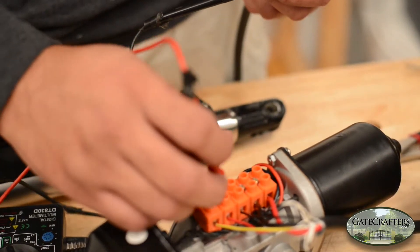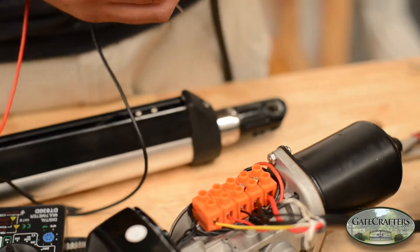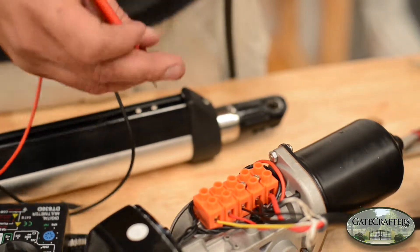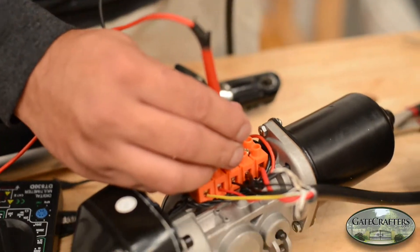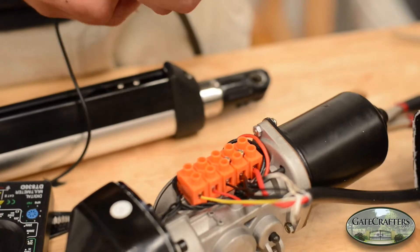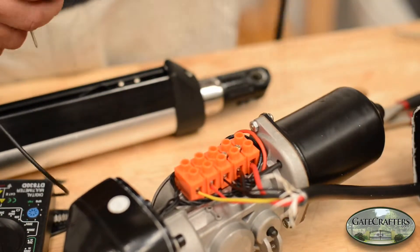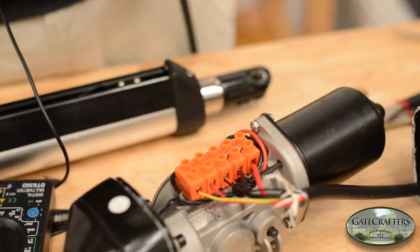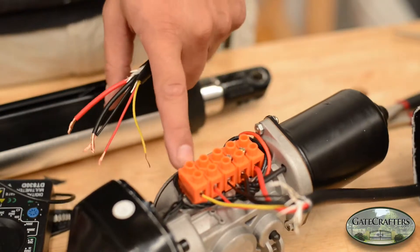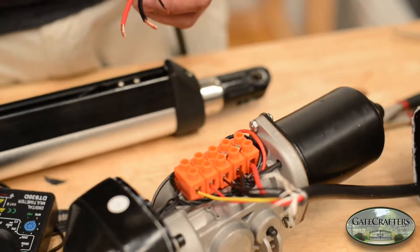Red to red, that one's making a good connection. Black to black, that's making a good connection. So we know we've got a good connection there. And then the next thing we can try just to make sure, while we're here, while we have this open, we can test the limit switches.